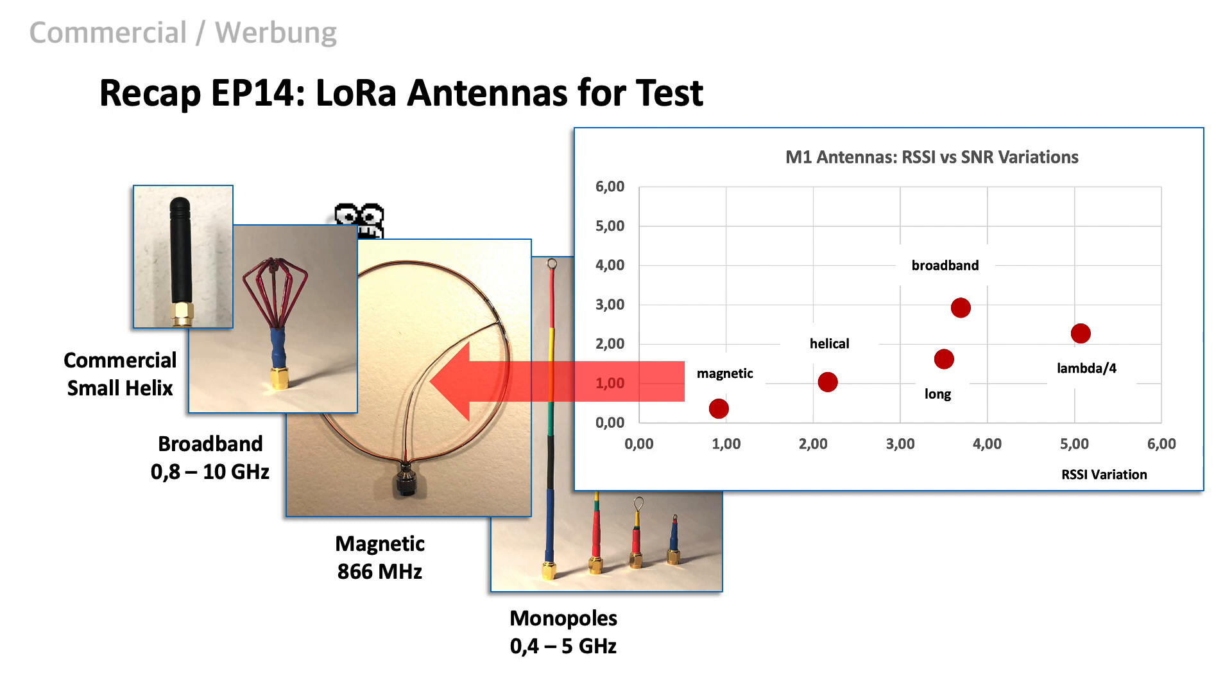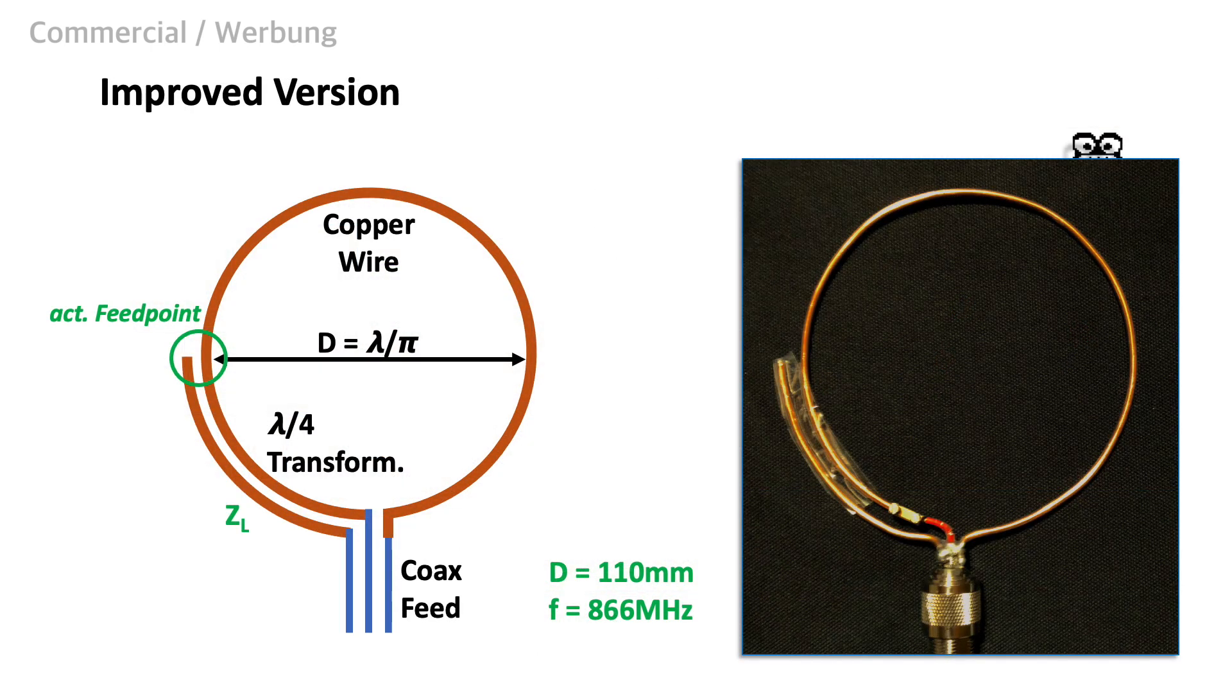The only disadvantage with that early prototype is that its impedance matching is poor, so that the antenna gain is not satisfactory. Looking at the early results, I thought it would be worth it to improve the impedance matching, hoping to improve its gain with that measure.